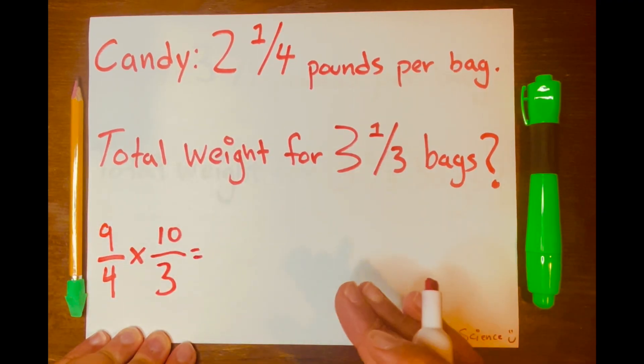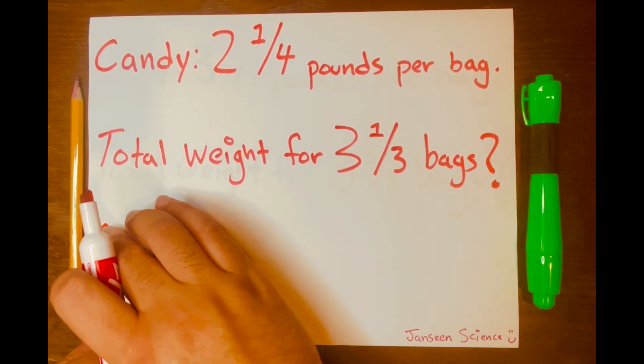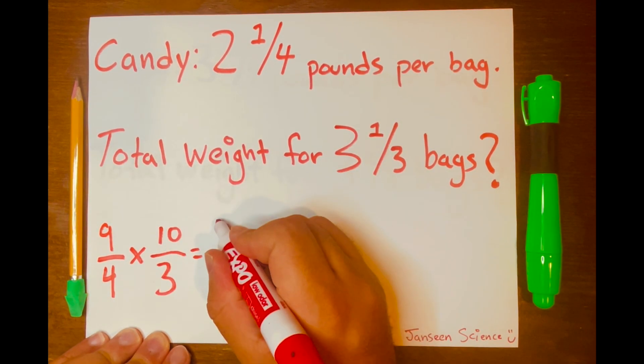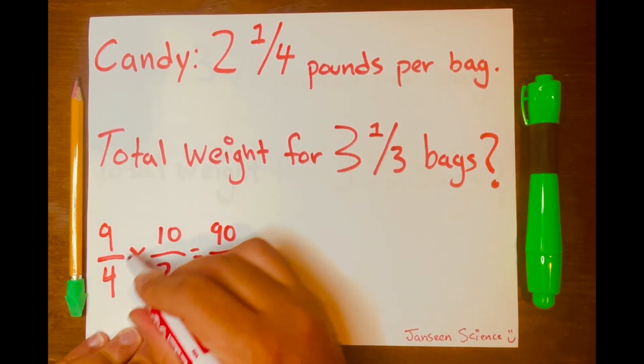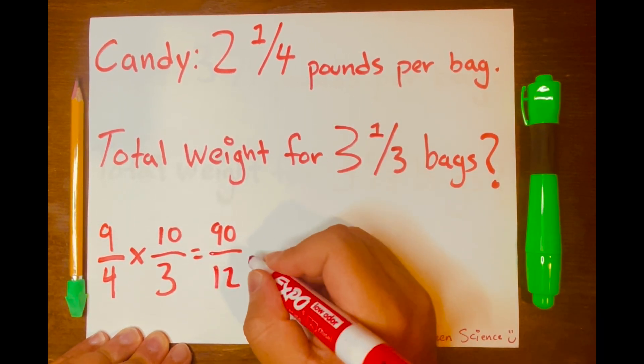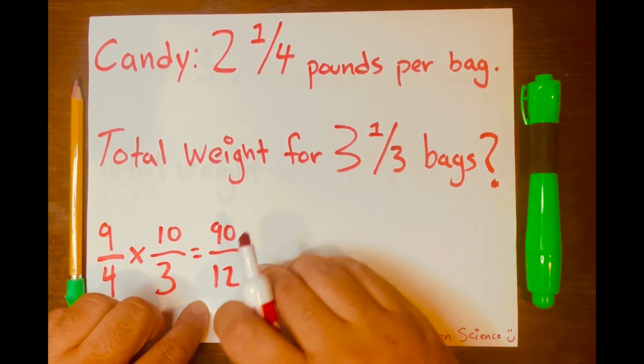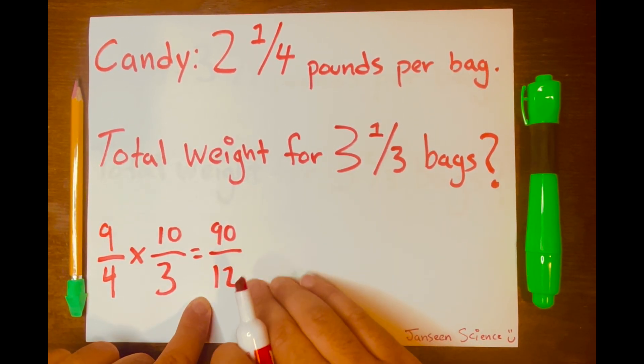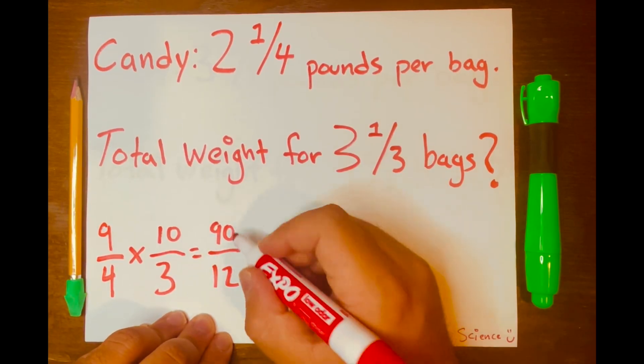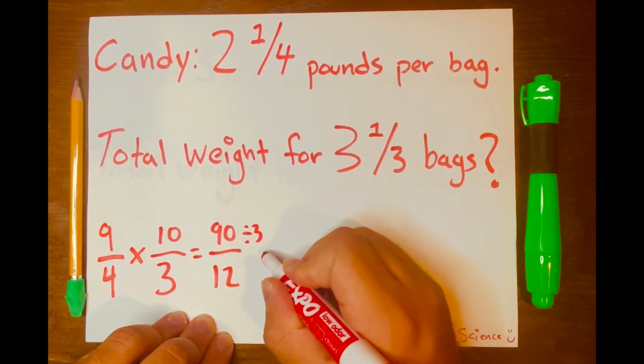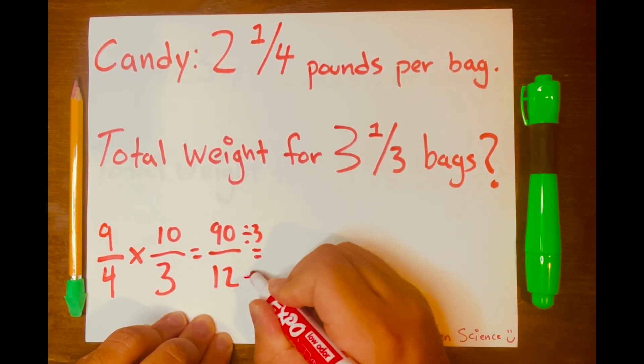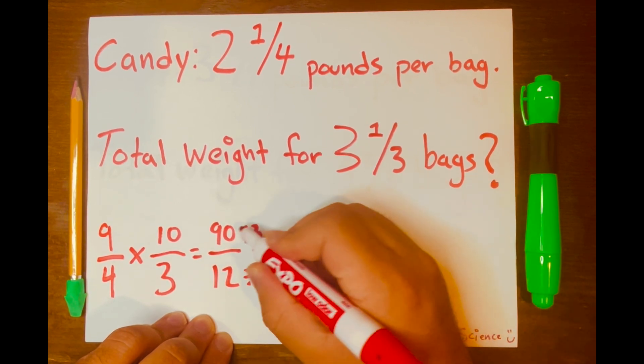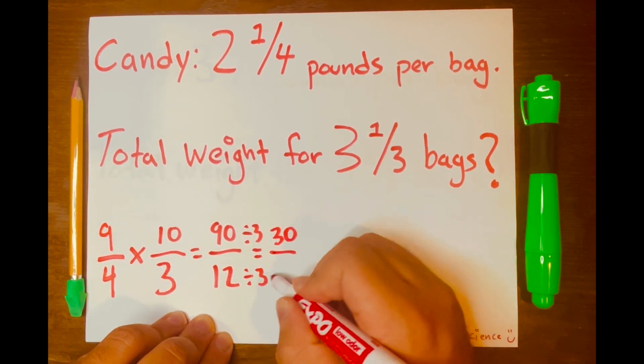And then we just multiply across. So nine times 10 is 90. Four times three is 12. And now we have a fractional answer of 90 over 12. And we need to simplify this further. So 90 divided by three and 12 divided by three will give us 30 over four.